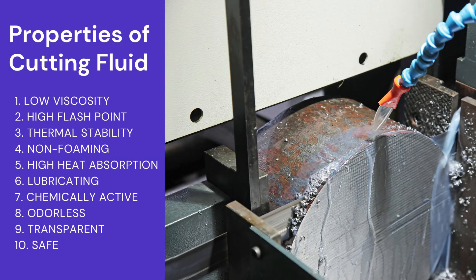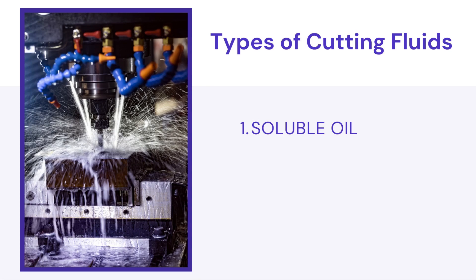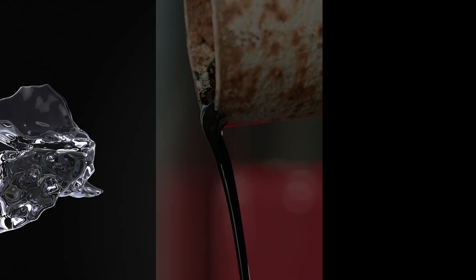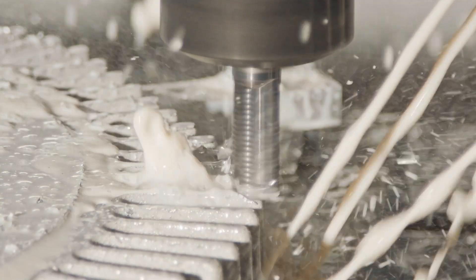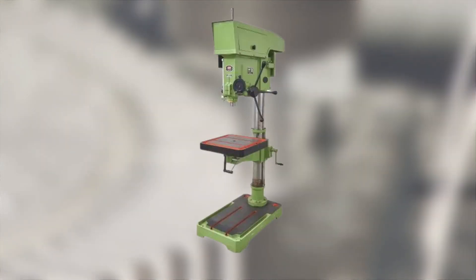Now since you know about the basics of cutting fluids, let's dive into the main types. Starting with the first main type, which is soluble oil. It consists of water, mineral oil, and soap as a coupling agent. An emulsion of mineral oil in water is used in lathe, drilling, and shaping operations with varying dilution ratios of 1:10 to 1:100.